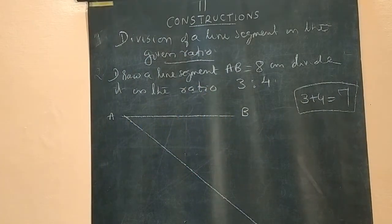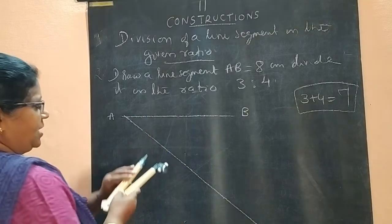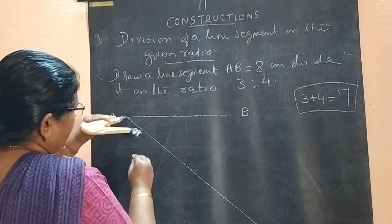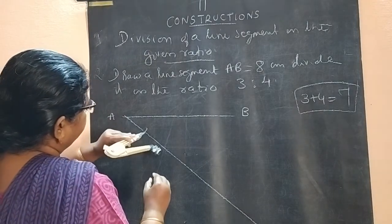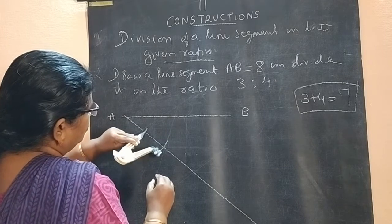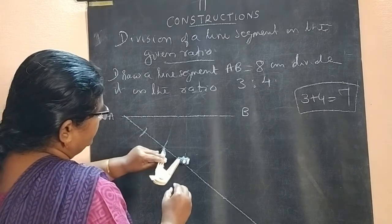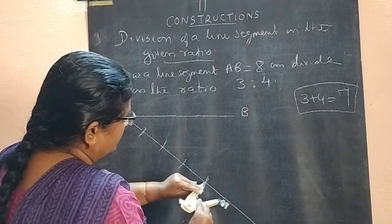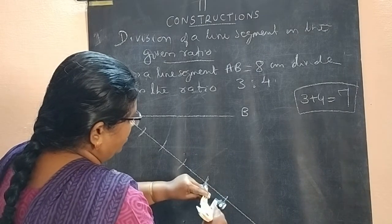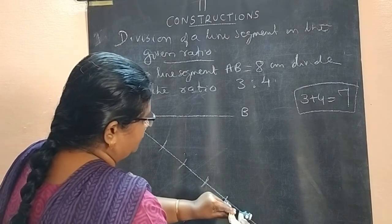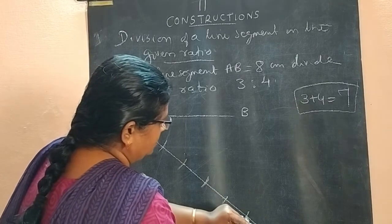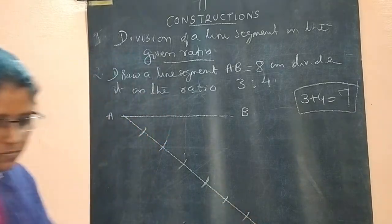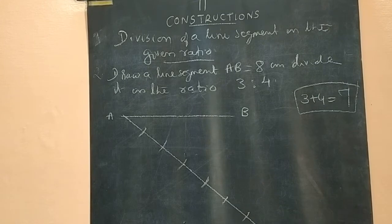For the second method, the total ratio 3 is to 4, that is 3 plus 4, 7 parts you make. So from here, 1, 2, 3, 4, 5, 6, 7 parts. Then you count and write.